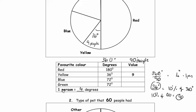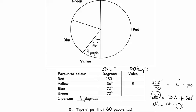The way we're doing it on the worksheet is to first work out how many degrees one person gets — that's the best way. Once you've got that, we can ask: how many lots of 4 degrees is in 180? Actually, 180 degrees is half the circle, so it must be half the people — 45 people.